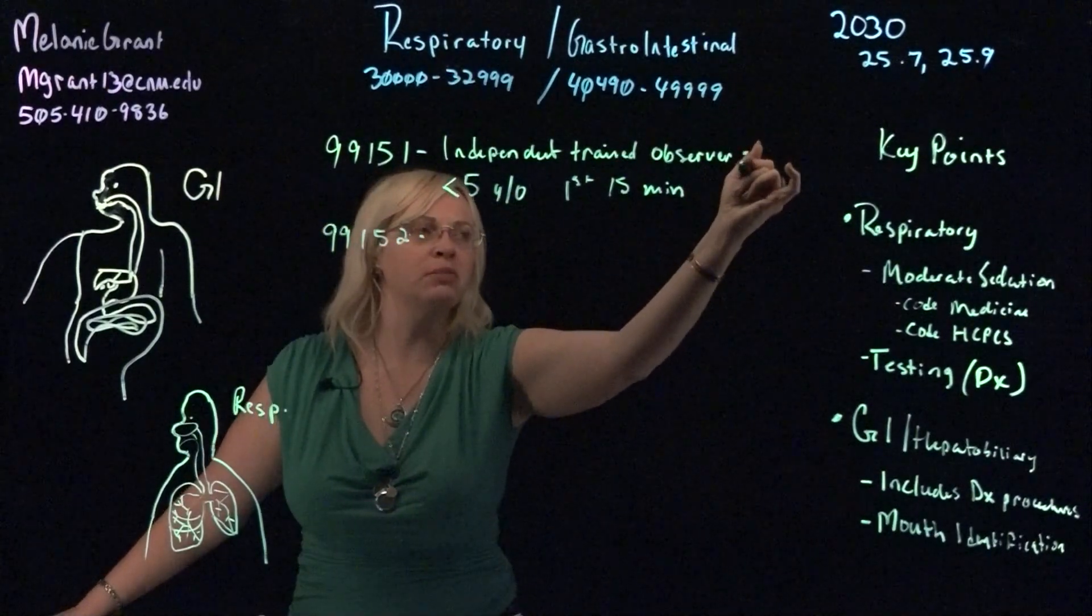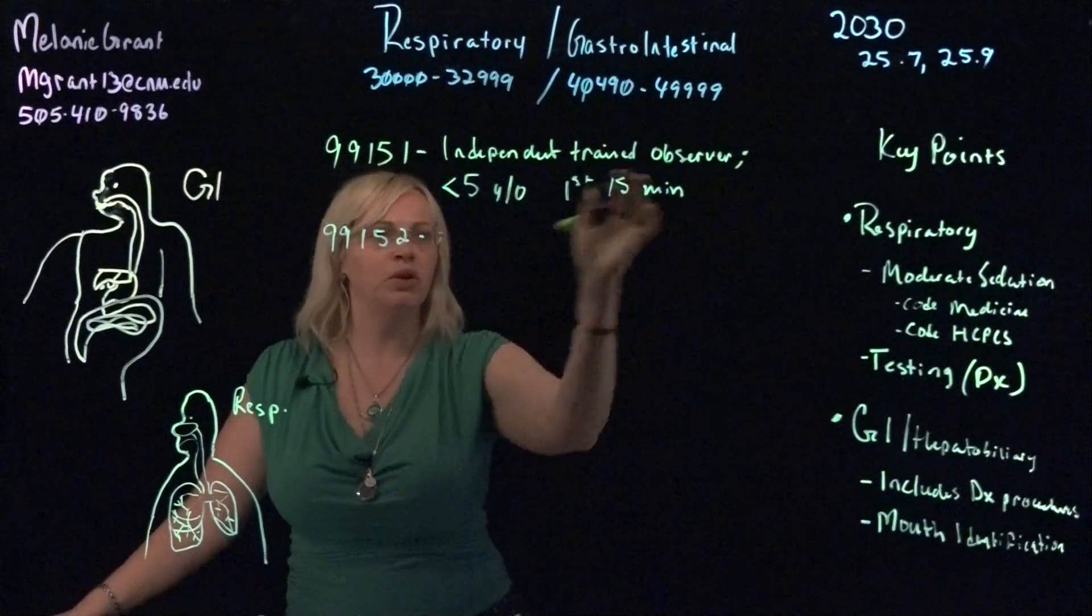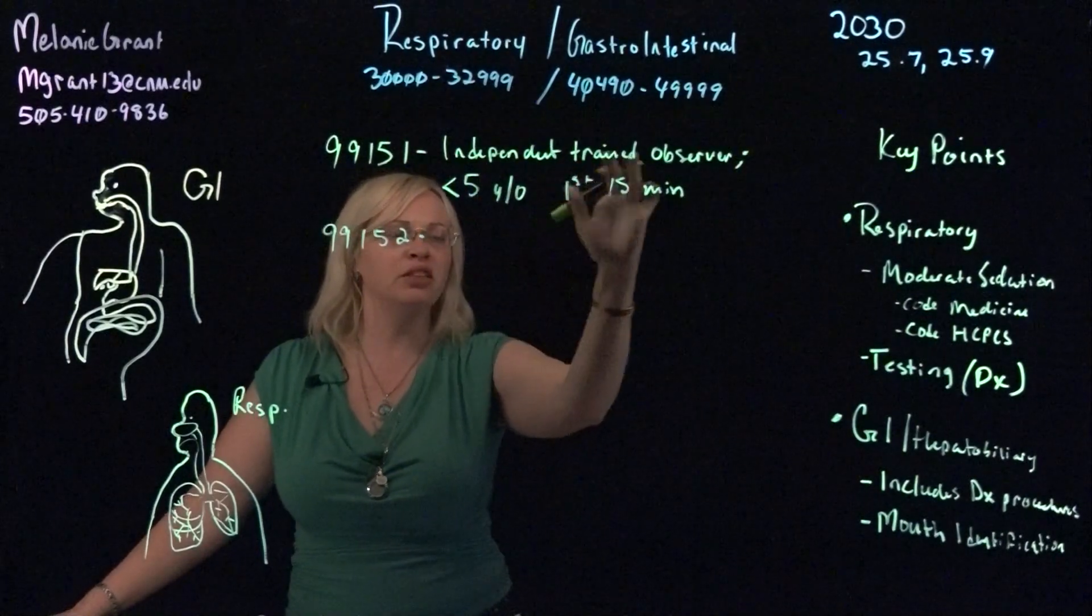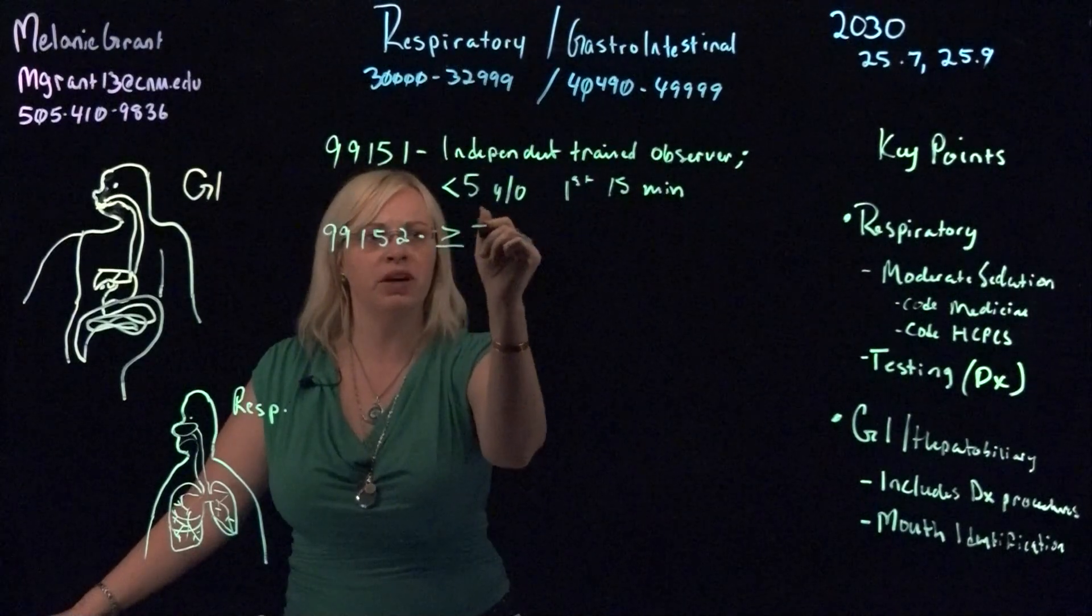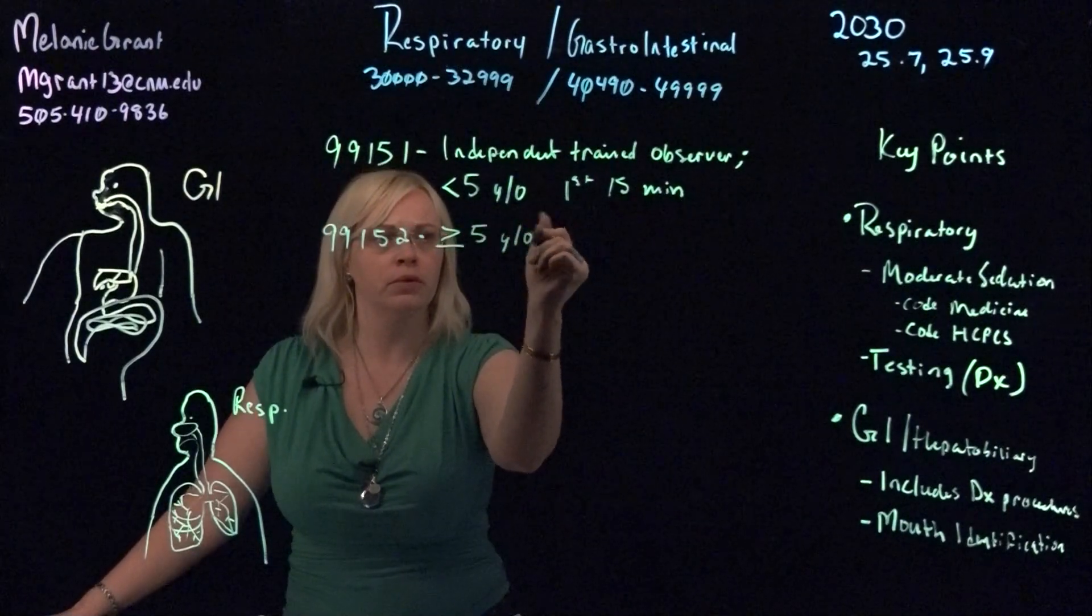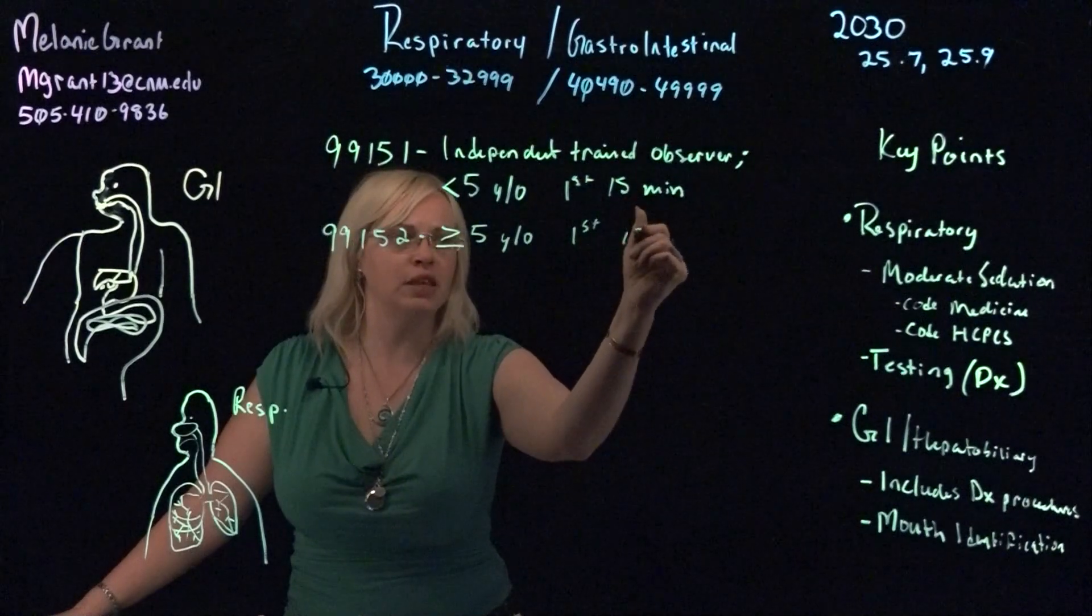So we can put a little semicolon here because we want to remember that this is independently trained observer and for greater than or equal to five years old for the first 15 minutes. That's still the same.